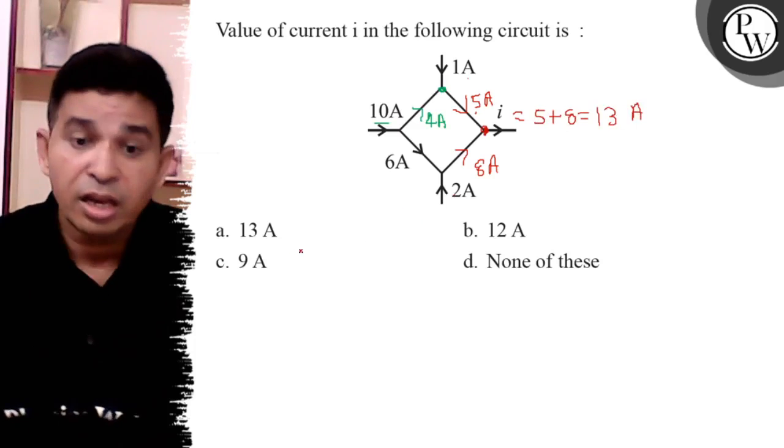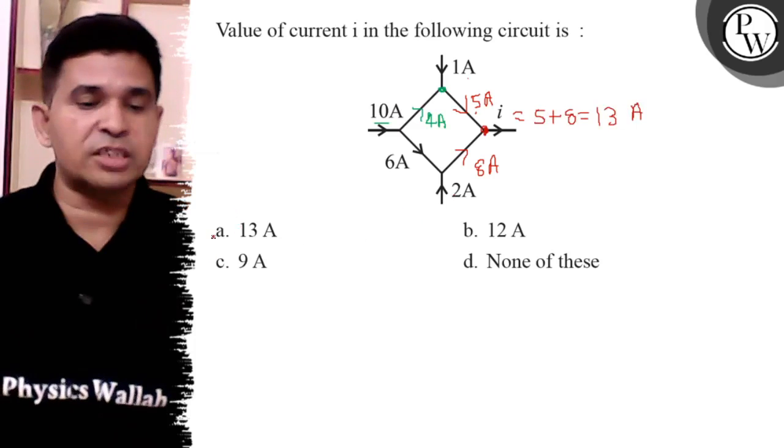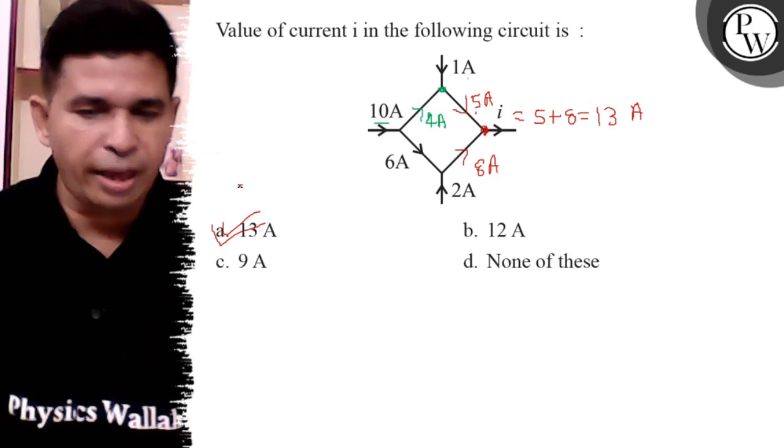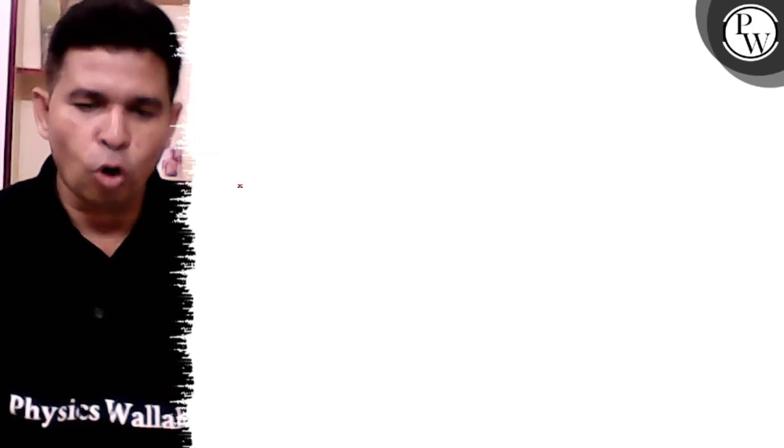So each and every junction point of the circuit follows Kirchhoff's current law. The answer is 13 ampere. Thank you. All the best.